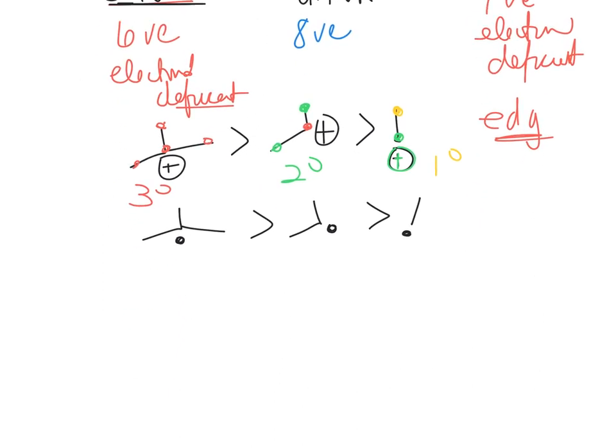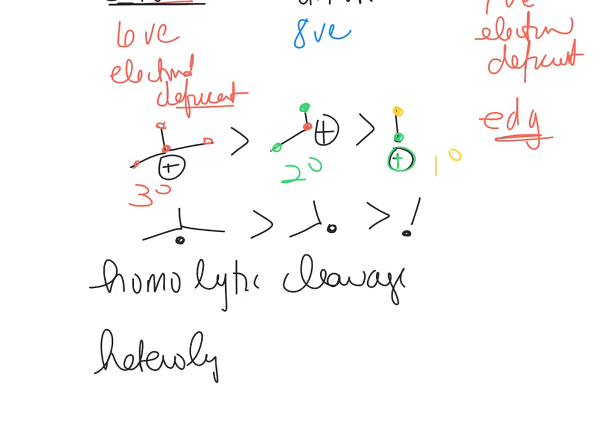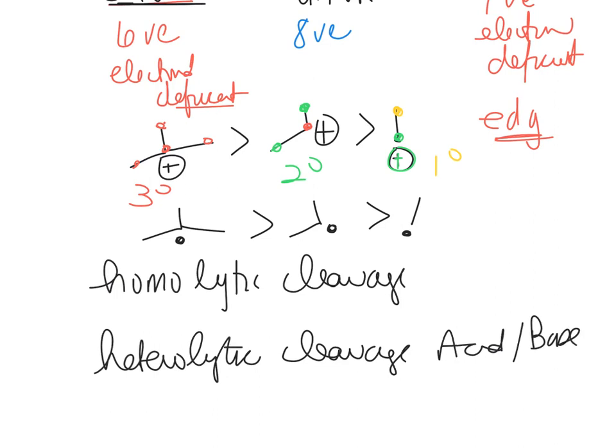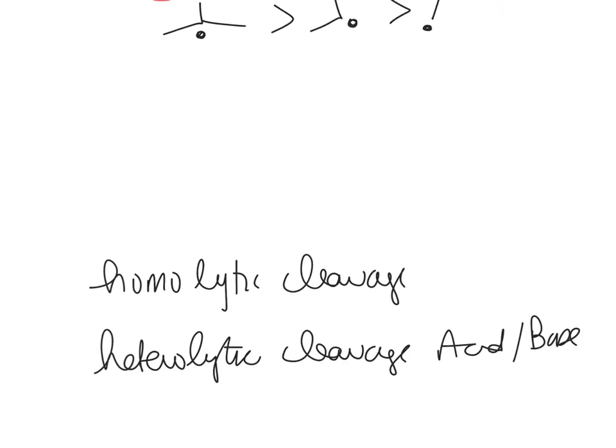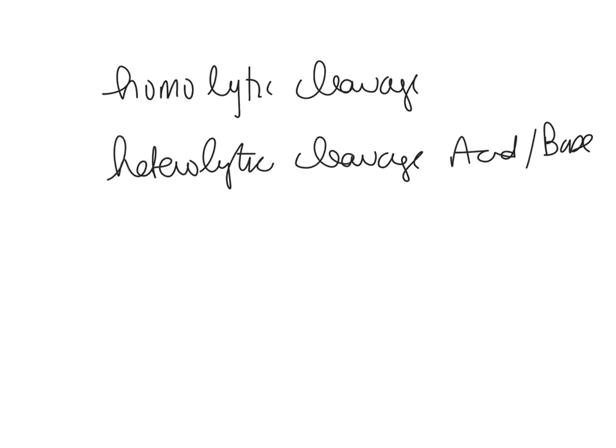How do these get generated? There's a thing called a homolytic cleavage and there's a heterolytic. You've done a heterolytic cleavage when you did acid-base reactions, and that's more common. Let me show you the difference.